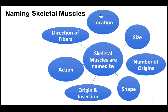Another location-based example: the intercostal muscles. Costal refers to the rib area — costal cartilage attaches the ribs to the sternum. The intercostal muscles, both external and internal, are the muscles between the ribs. In fact, if you eat meat and you're eating spare ribs, you're eating intercostal muscles.